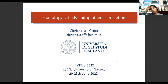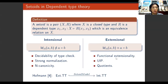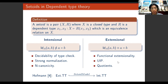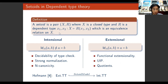This talk is titled Homotopy Setoids and Quotient Completion. First of all, let's recall what a setoid is. This is a notion of constructive mathematics introduced by Bishop, which consists of a collection of objects equipped with an equality relation. In type theory, specifically intentional type theory, it becomes just a pair where we have a closed type X and a dependent type R over X, which is an equivalence relation.